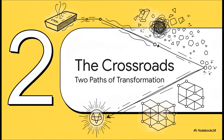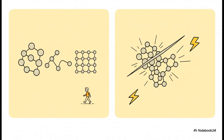As that austenite starts to cool down, it becomes unstable. The iron and carbon atoms have to rearrange themselves into a new, more stable structure. And the path they take from this moment on will define everything about the final piece of steel. They basically face a choice — two totally different ways to rearrange themselves, two competing mechanisms that lead to wildly different outcomes. We call them reconstructive and displacive transformations.